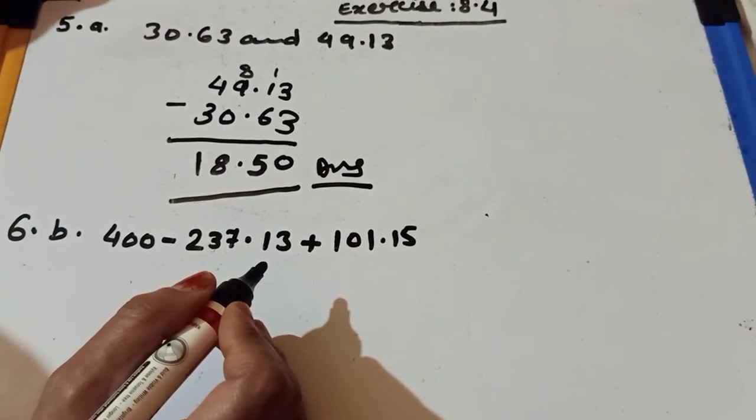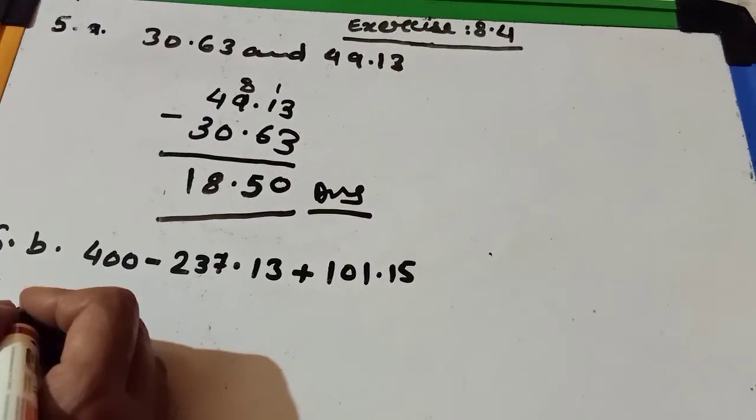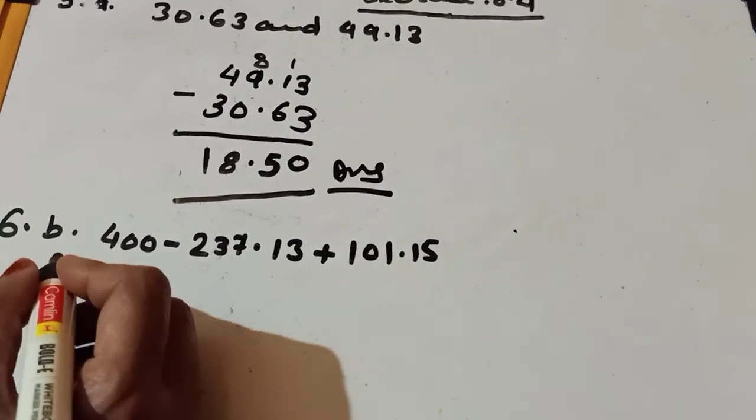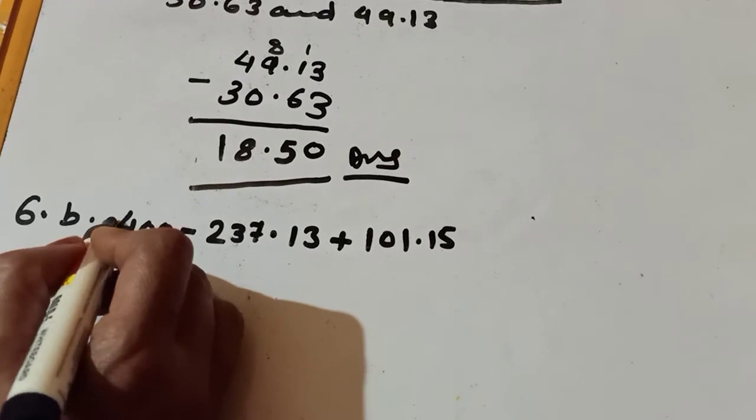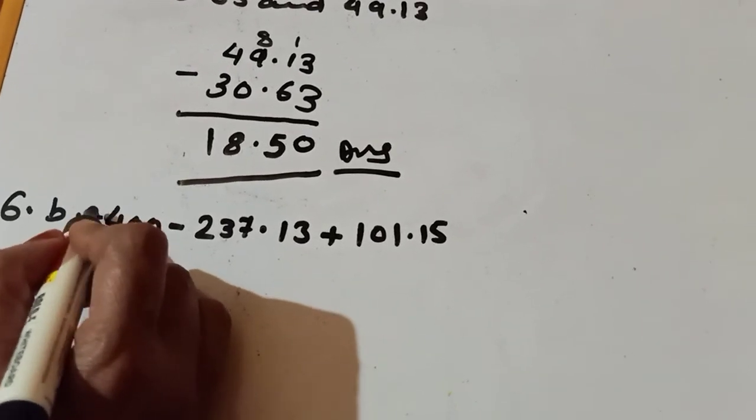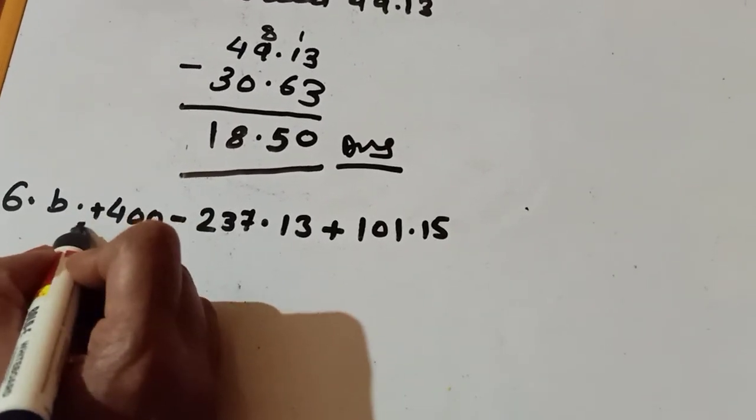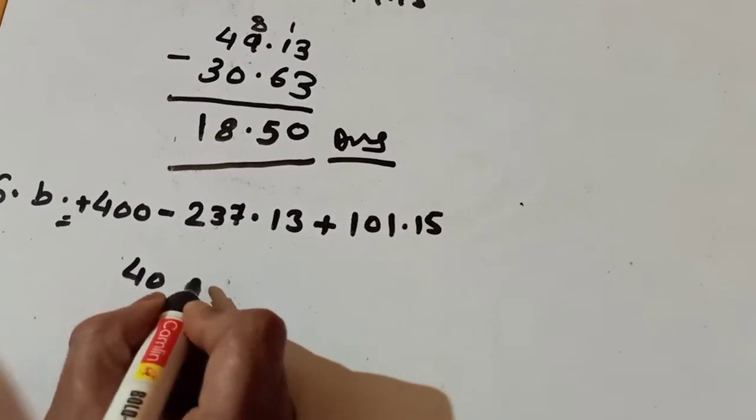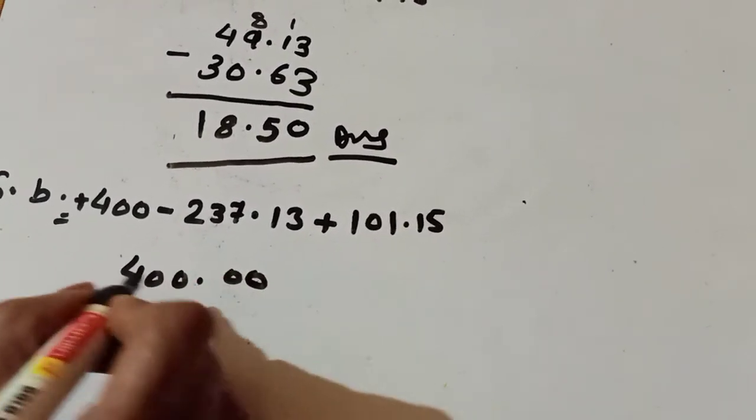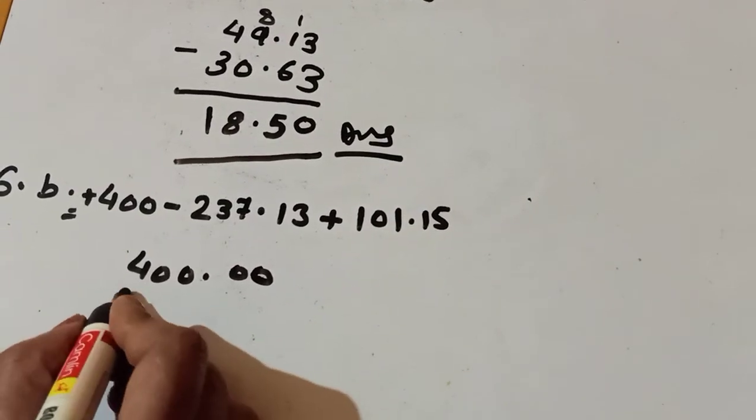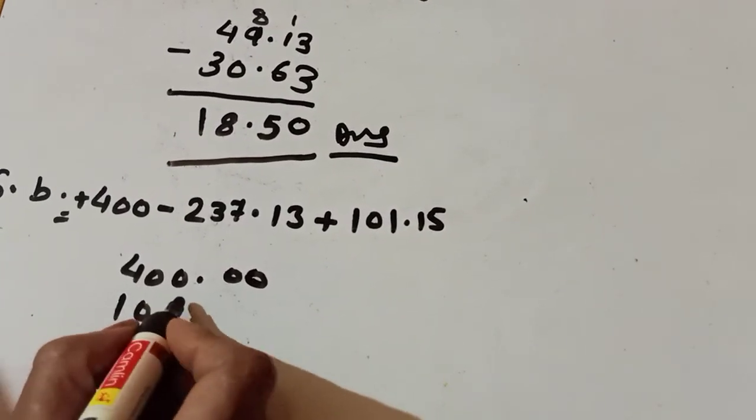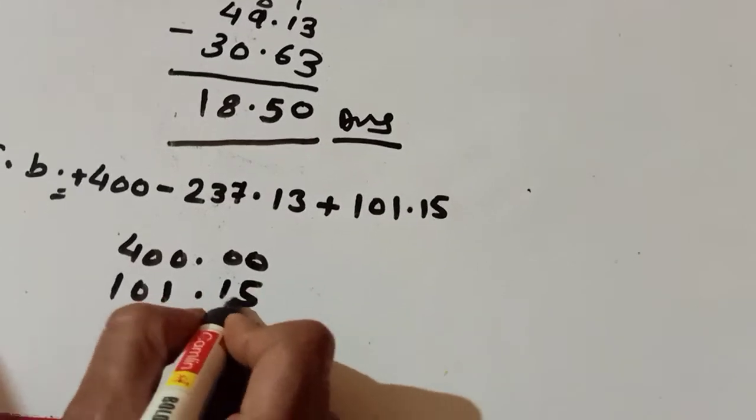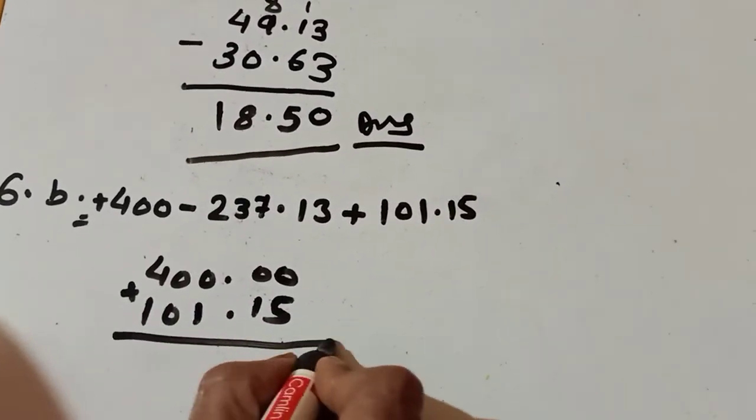That is addition. Children, first you take 2 numbers. Always remember before the first number addition sign is hidden. So we take 400.00, we can write like this. 101.15.